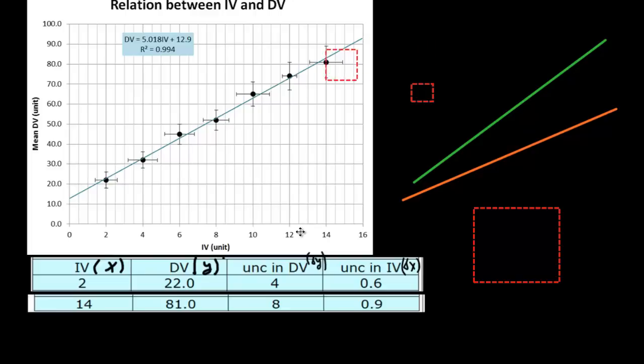So I'm going to put error boxes, but I only put them on the first and last point. I could put them on all the points, but in terms of uncertainty and slope, it's enough to just consider the first and last point. We don't gain a lot if we include the other points.